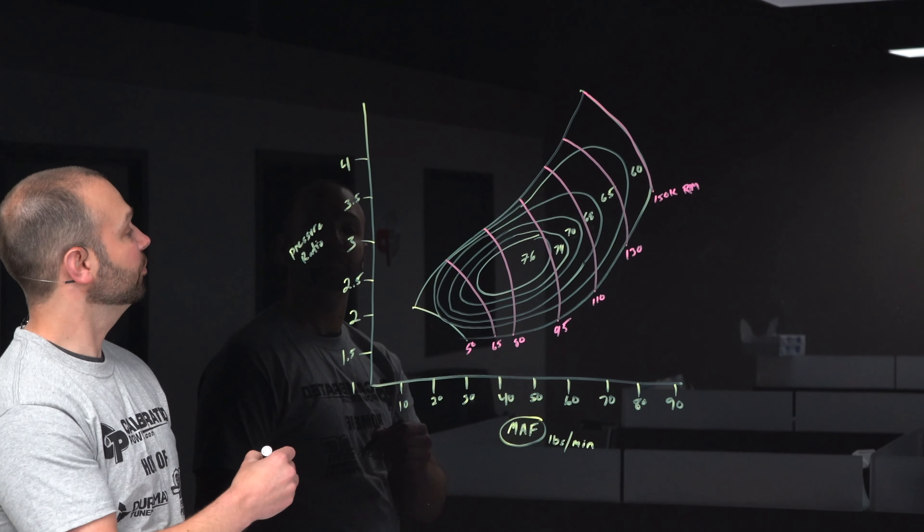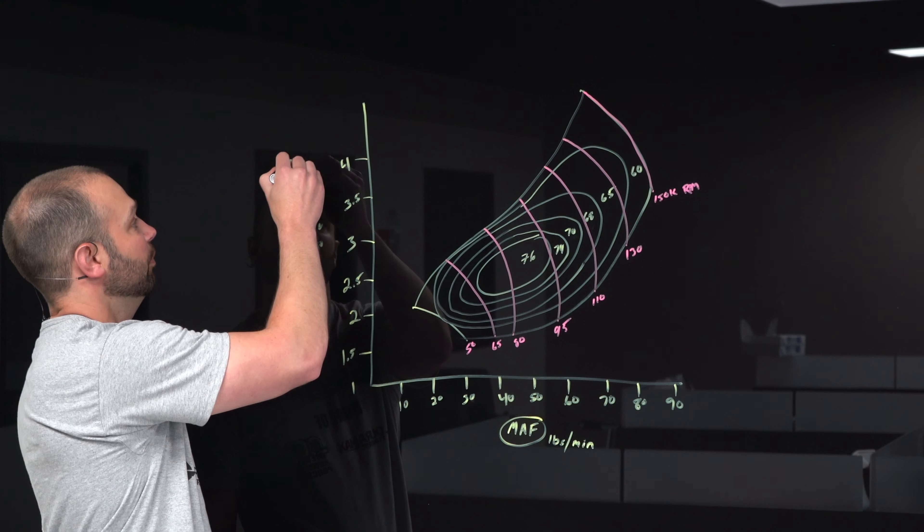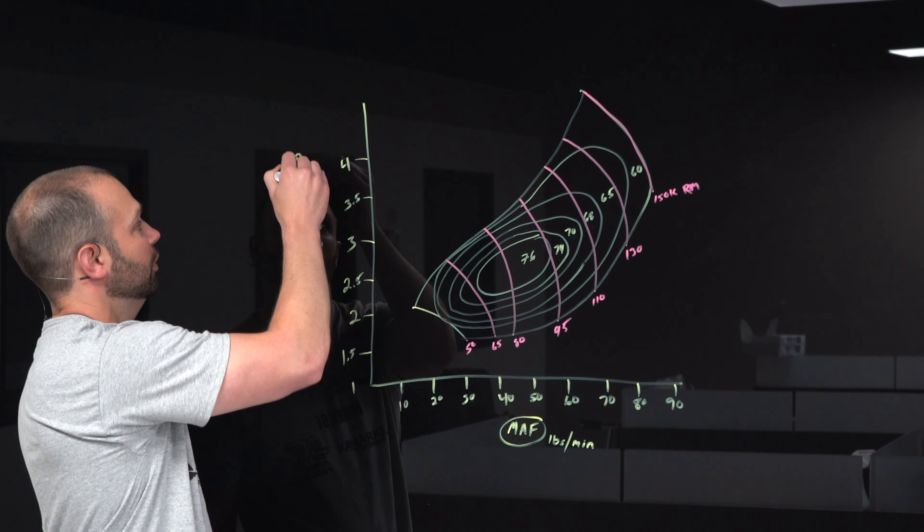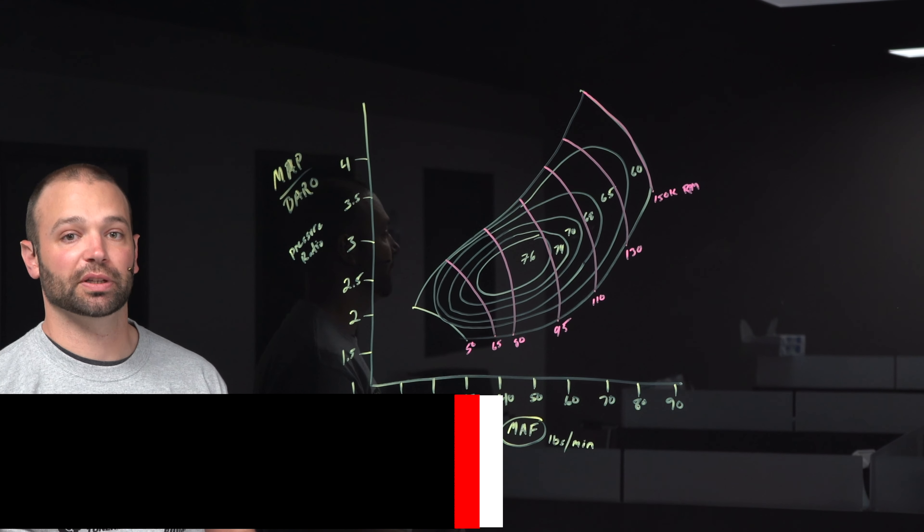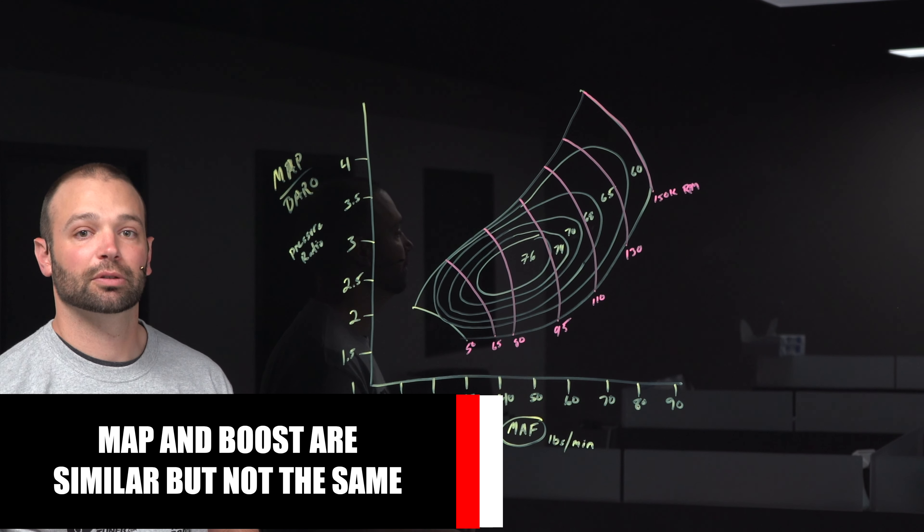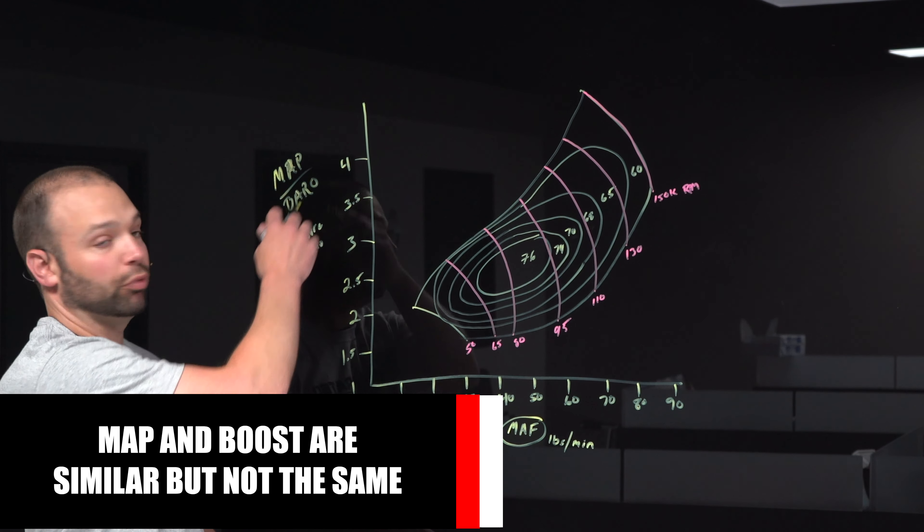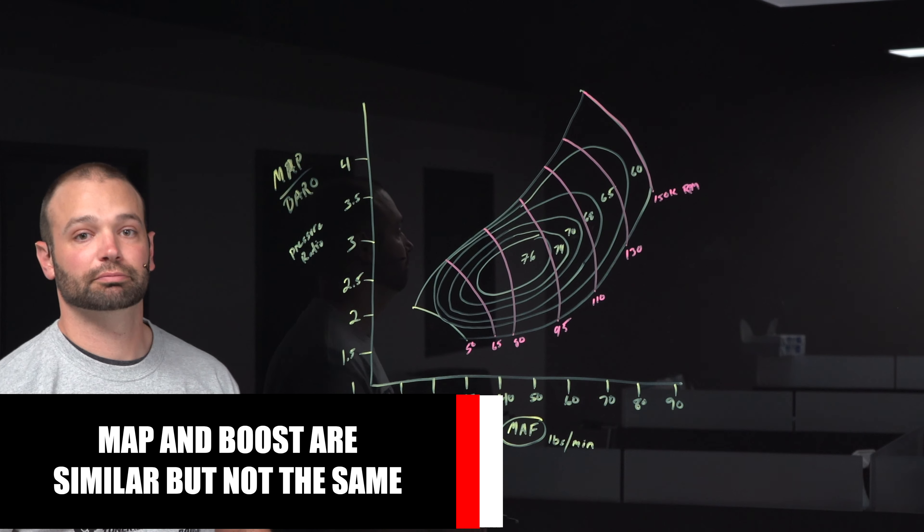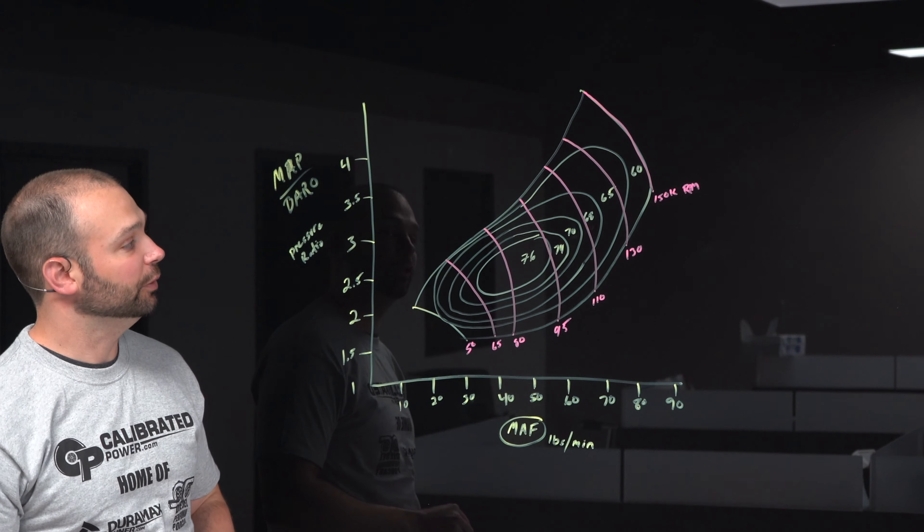Pressure ratio, that's a good one. So that's MAP divided by BARO. So you need a MAP sensor and a BARO sensor. Manifold air pressure or discharge air pressure, one of those two, and barometric pressure. So it's the ratio between those two things. If you know both of those, you can find the ratio.